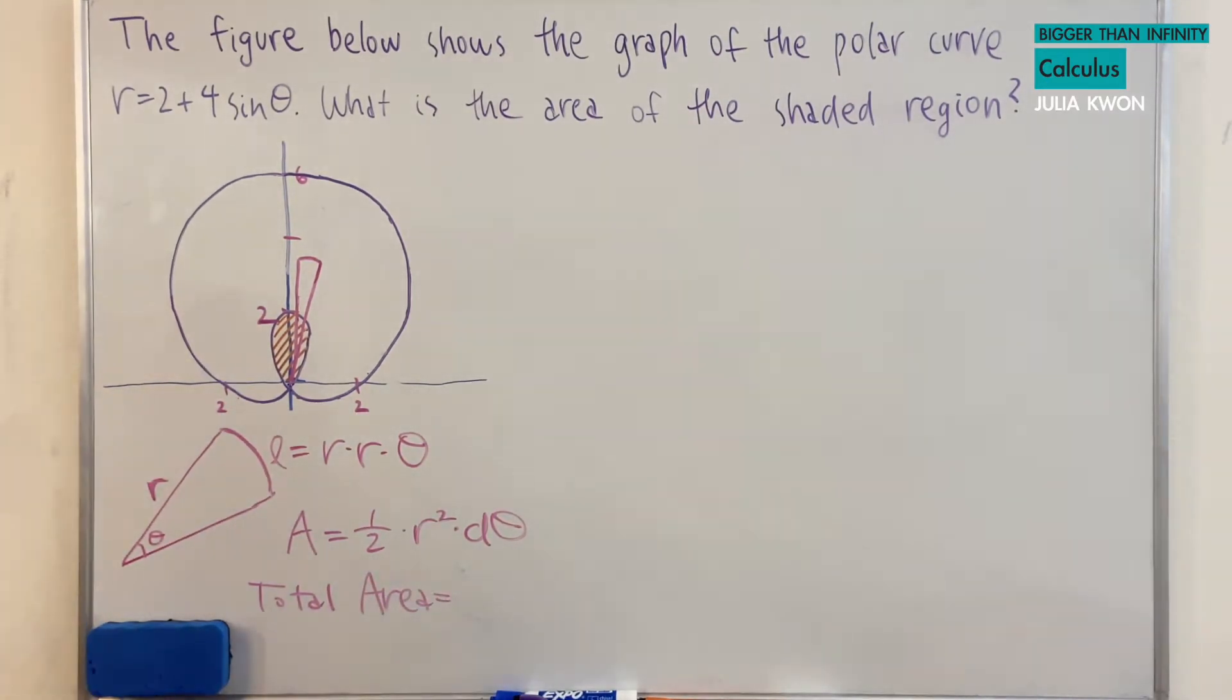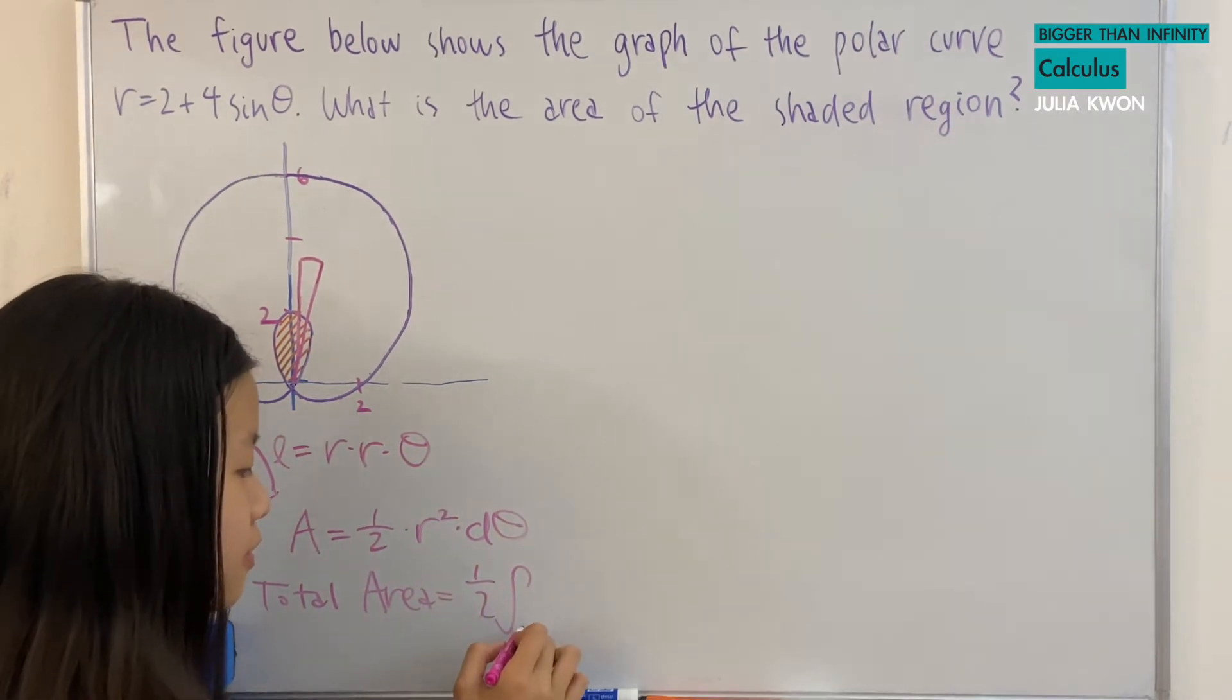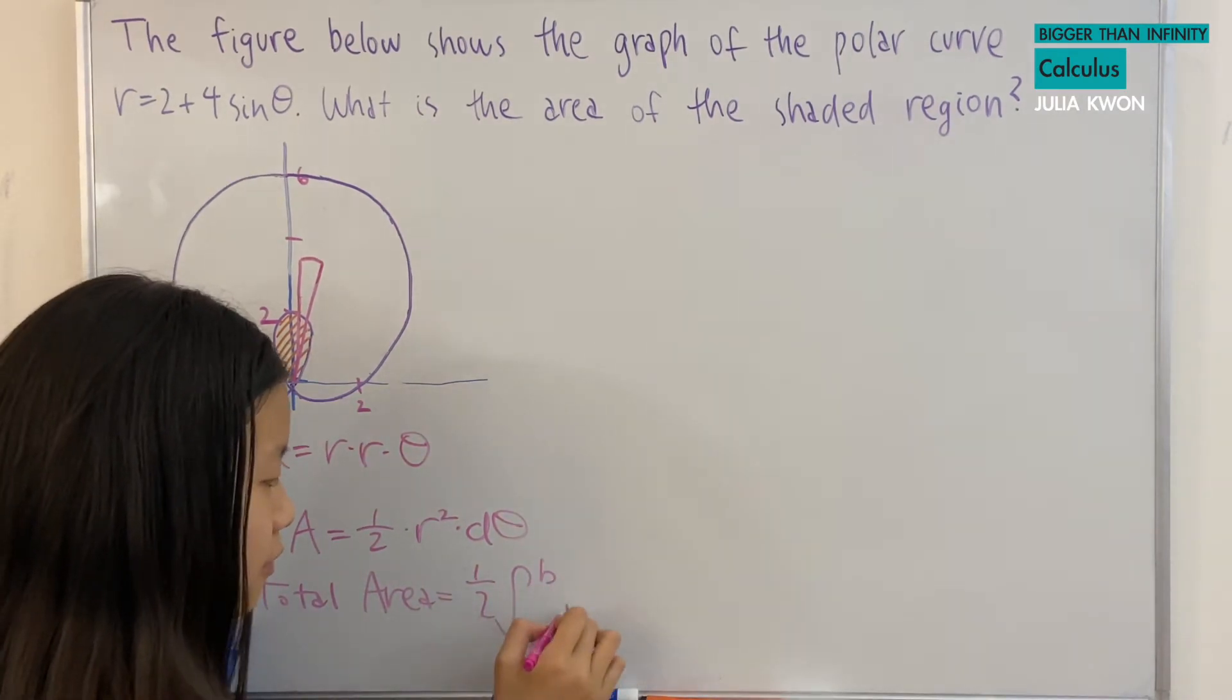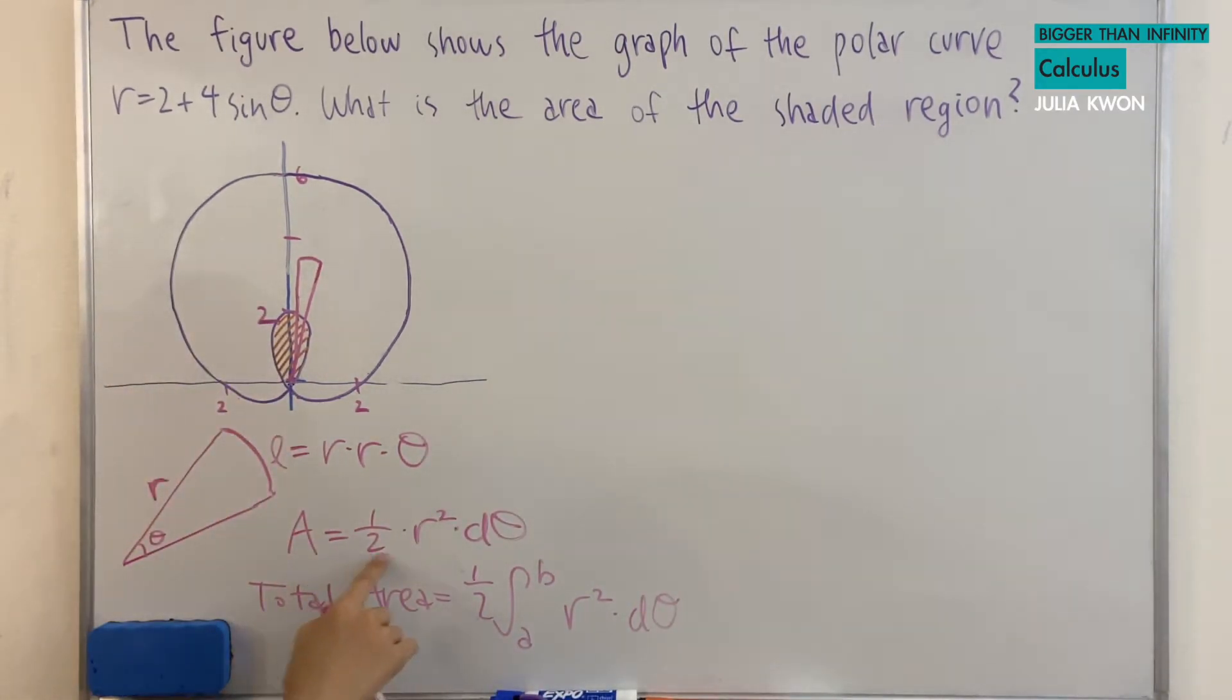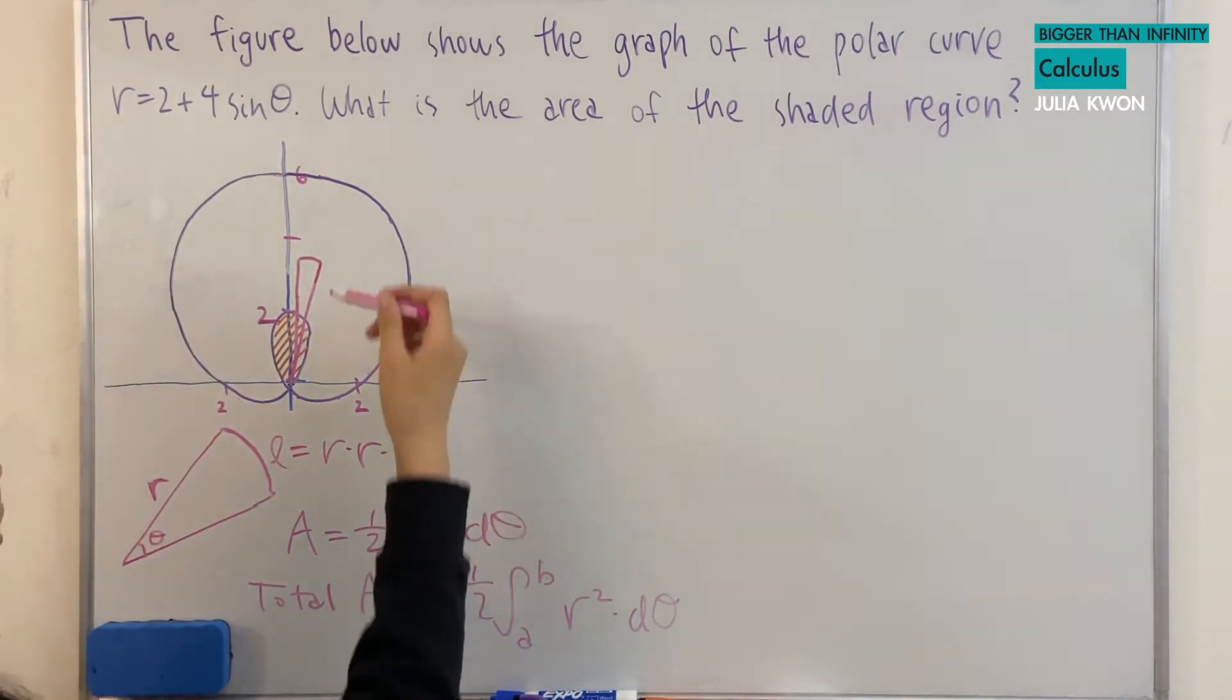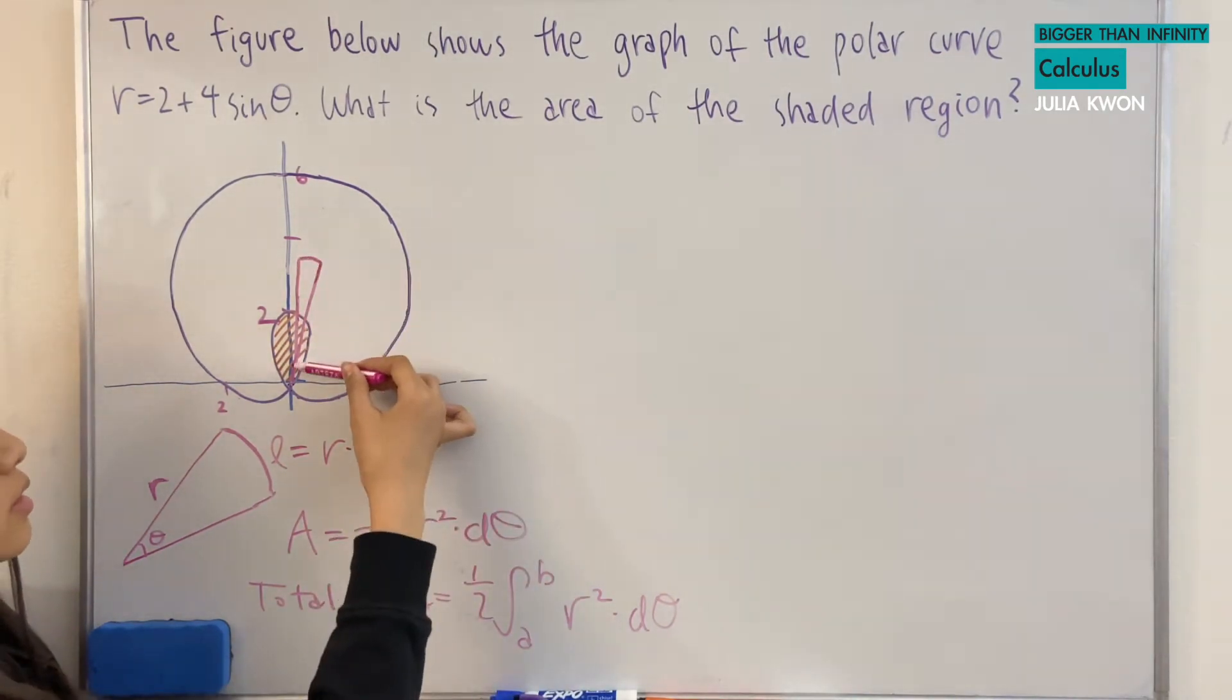And so the area will be equal to one half times r squared times d theta. Now this area, we will have to take the integral of it. So from a to b, one half r squared d theta.